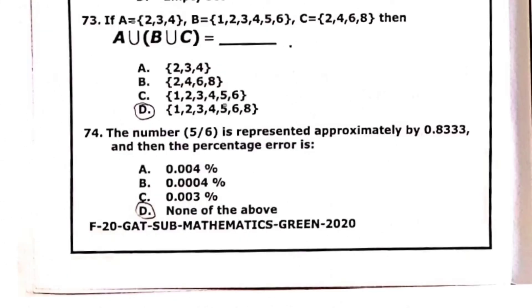Now question 73: if A is some given set B and C, then A union B union C is equal to. We have to take the union of these sets. It's very easy, you have to write all these numbers that belong to these three sets.